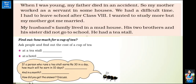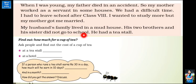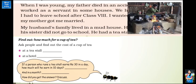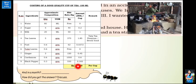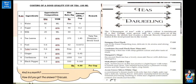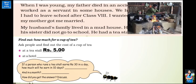Kiran कहती है, when I was young, my father died in an accident. So my mother worked as a servant in some houses. We had a difficult time. I had to leave school after my eighth class. I wanted to study more but my mother got me married. My husband's family lived in a mud house. His brothers and sisters did not go to school — they had a small tea shop. अगर आप एक छोटे से दुकान में जाएंगे, तो एक cup चाई की कीमत चार से पांच रुपए तक हो सकती है, जबकि बड़े दुकानों में चाई थोड़ी costly होती है। At a tea stall, a cup of tea costs ₹5, and at a hotel it costs ₹30.